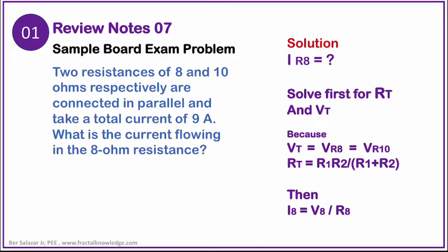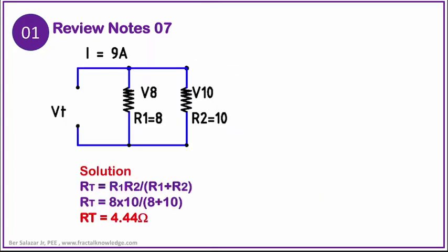We can compute for the total resistance, then solve for the total voltage because we have the total current given. Solve for the total resistance first, second the voltage total, because we know that in parallel circuit the total voltage is equal to the voltage in 8-ohm resistor. The total resistance can be solved using parallel resistance formula.